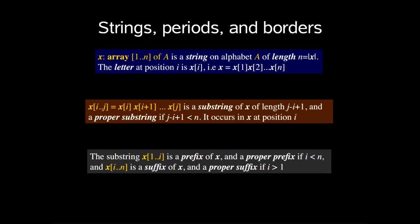So we will start by just going over some notation and terminology. We should already know what is essential for the following. x is an array of length n of A, which is a string on the alphabet A. The letter at position i is x of i, that is, x is x1, x2 up to xn.